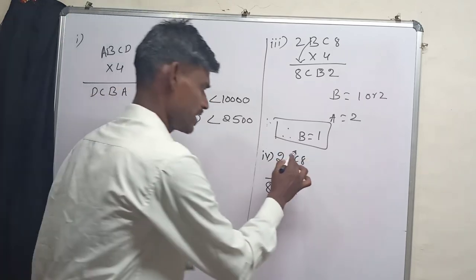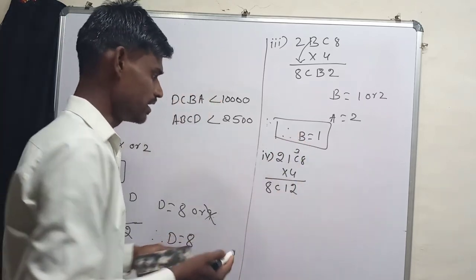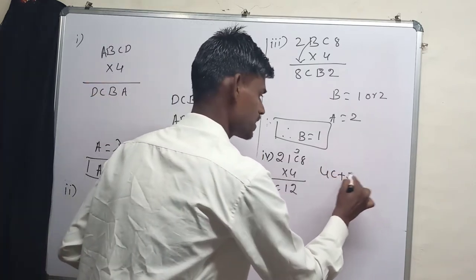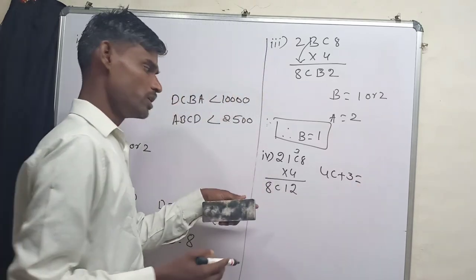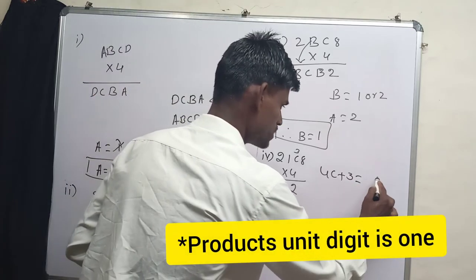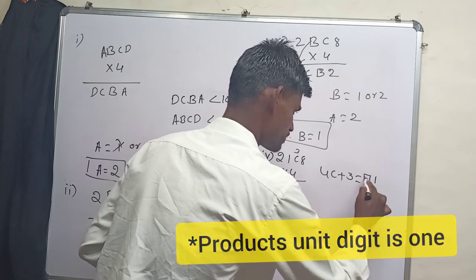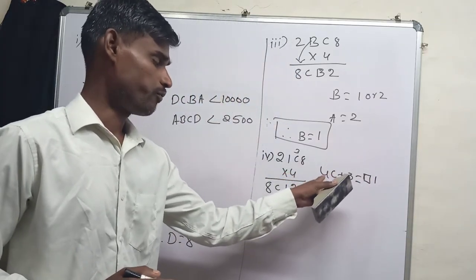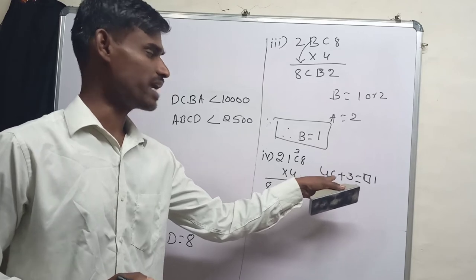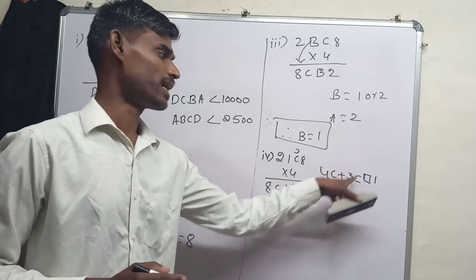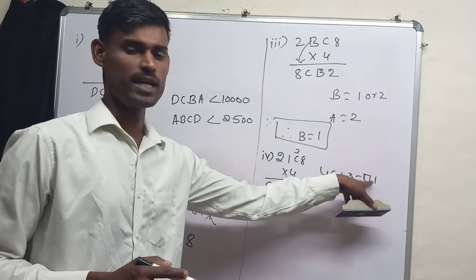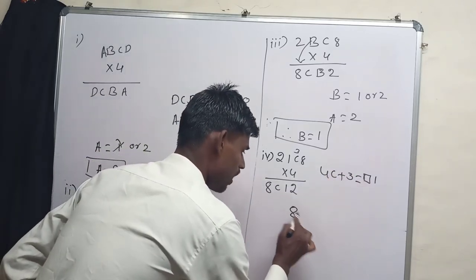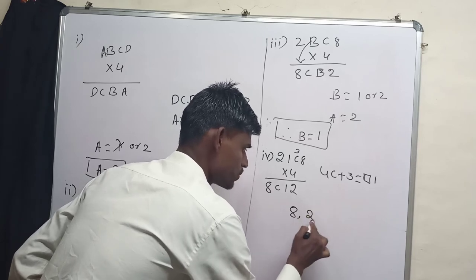So 4 times 8 is 32. There is a carryover 3 here. Now what I am going to write: 4 times of C plus this carryover 3 results to a number which ends with 1. So 4 times of C must end with 8, so we can get a result which ends with 1.